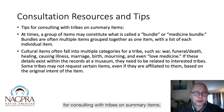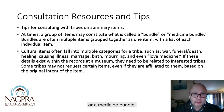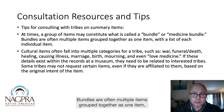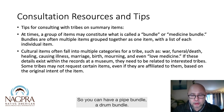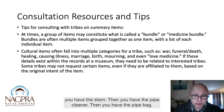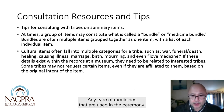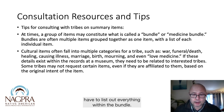Some tips for consulting with tribes on summary items: at times, a group of items may constitute what is called a bundle or a medicine bundle. Bundles are often multiple items grouped together as one item with a list of each individual item. For example, a pipe bundle: you have the pipe bowl, the piece of rock that makes the pipe, then the stem, then the pipe cleaner, then the pipe bag, then any medicines used in the ceremony. All this together may constitute one bundle, but you have to list out everything within the bundle. You just can't simply list 'pipe bundle' — you have to list everything within it.